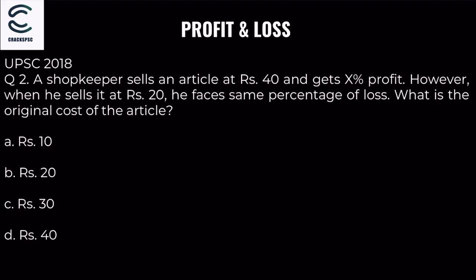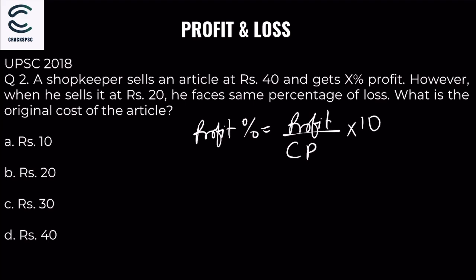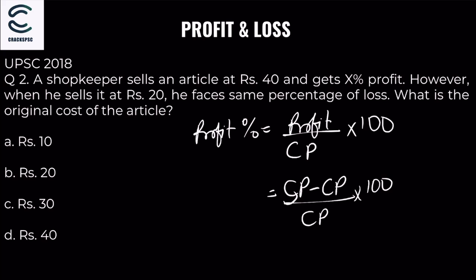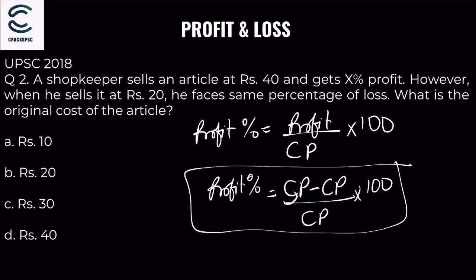Let's solve using the profit percent formula. Profit percent = (SP - CP) / CP × 100. When selling price is 40, profit percent x = (40 - CP) / CP × 100. This is equation one.